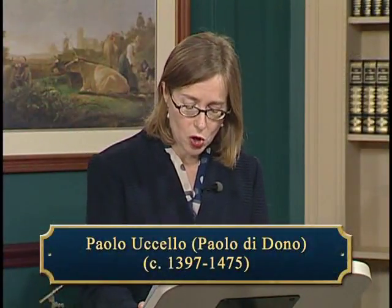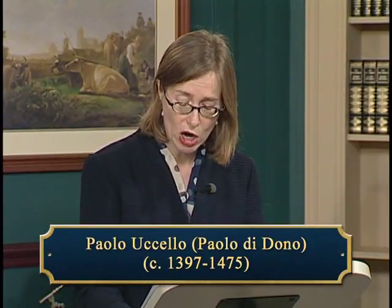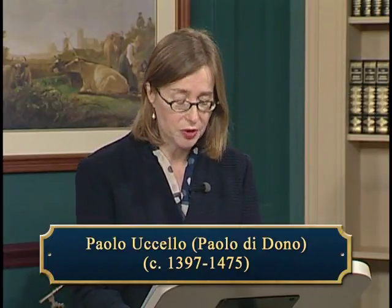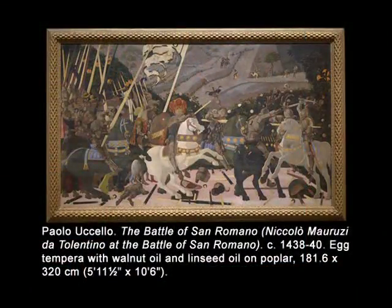Paolo di Dono, whose dates were about 1397 to 1475, was called Paolo Uccello — meaning Bird — as he was said to have been fond of both keeping and depicting birds. He was a more idiosyncratic Florentine painter than Masaccio, one who delighted above all in using the new linear perspective system in creative and unusual ways. Vasari claimed that when Uccello's wife would try to call him to bed at night, he would respond: 'Oh, what a lovely thing this perspective is.' His love of perspectival construction is plainly evident in the Battle of San Romano.